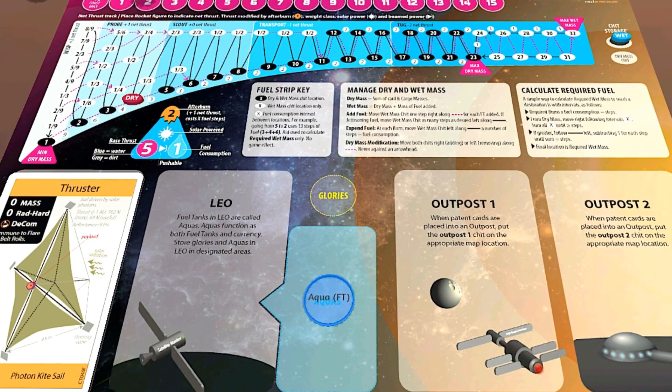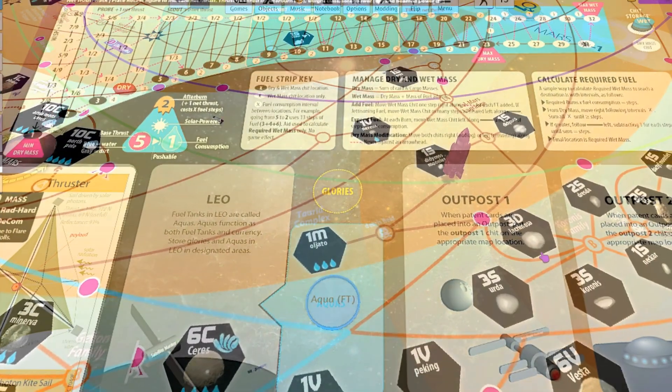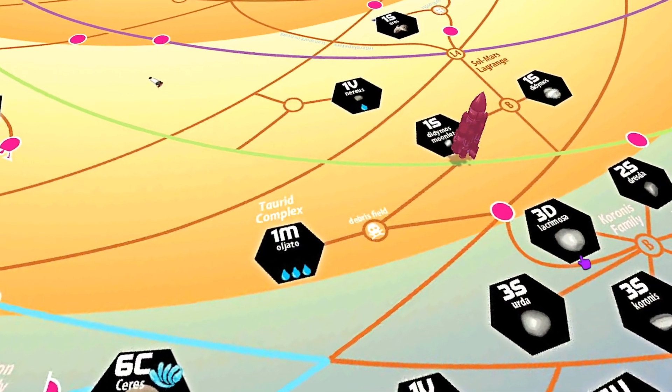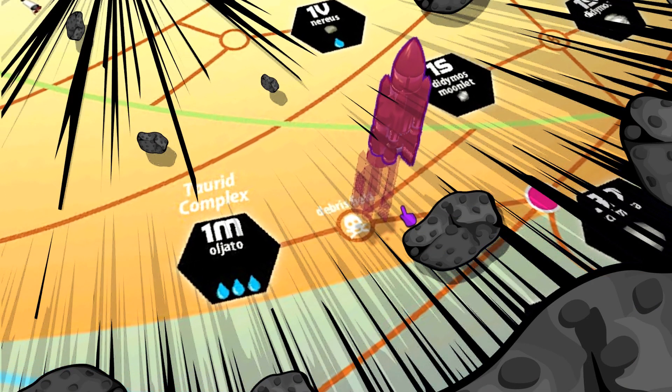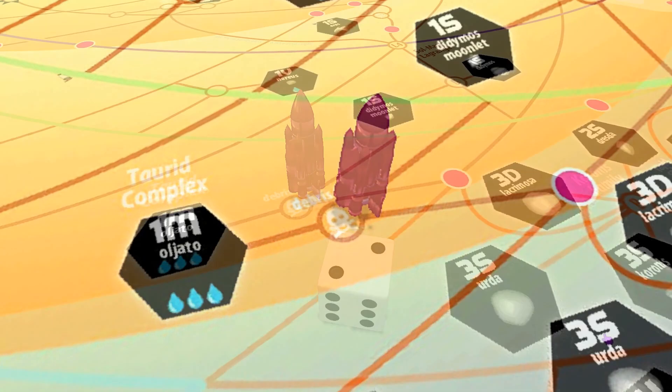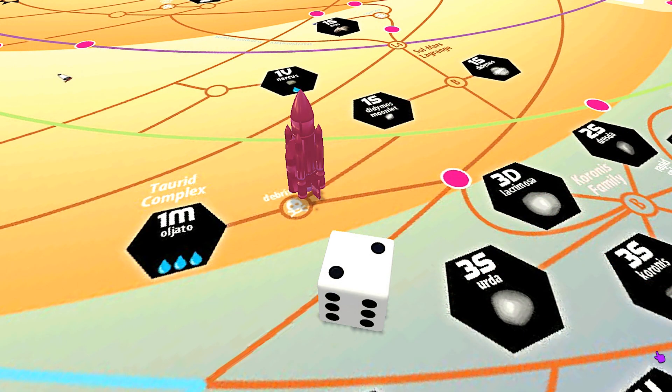But that's going to take some time. I decide that time is of the essence and I move into the crash hazard space—the debris field—and take the risk. I roll a two. Close—a roll of one would force me to involuntarily decommission every card in my rocket stack. Space travel is risky business.